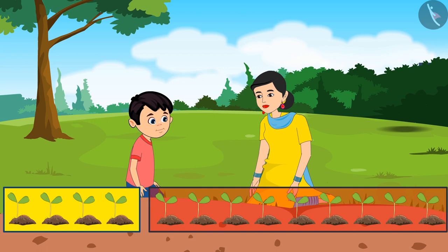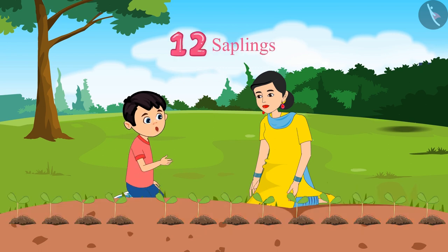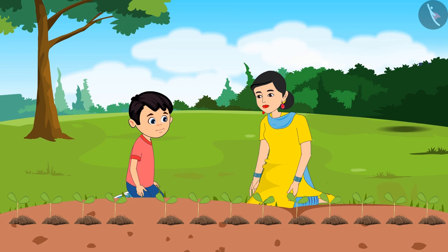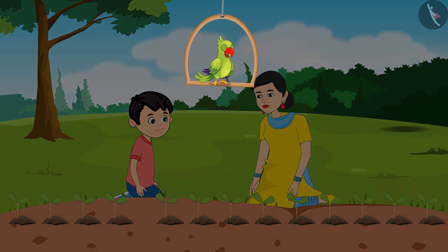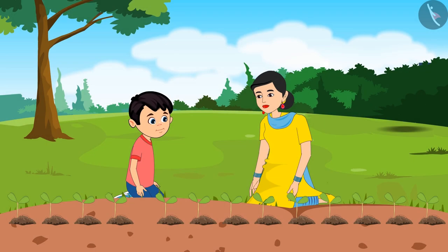Mom, we have planted twelve saplings in total. Children, has Chotu counted correctly? Let us see.